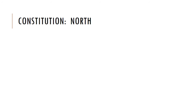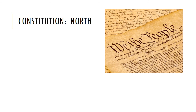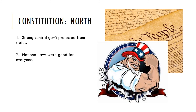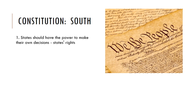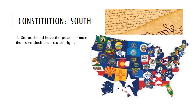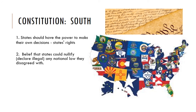Our last issue between the North and the South was the Constitution. The North liked a strong central government to protect the states, believing that national laws were good for everybody — a strong Uncle Sam protecting everyone. In the South, however, they had a different attitude. They believed states should have the power to make their own decisions — states' rights — and that states knew what was best, similar to the Articles of Confederation giving states more power. They also believed states should nullify — or declare illegal — any national law they disagreed with. This is a violation of Article VI of the Constitution, the Supremacy Clause, which states the Constitution is the highest law of the land. That's going to be a problem.